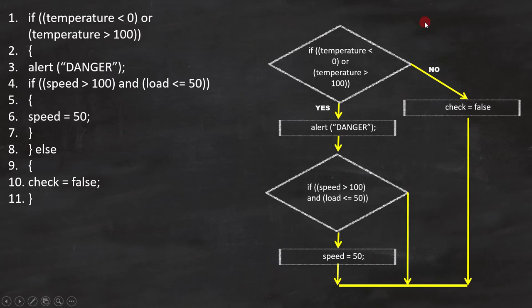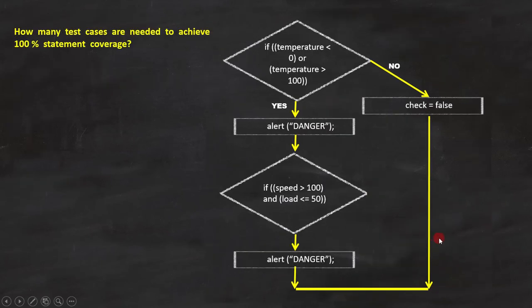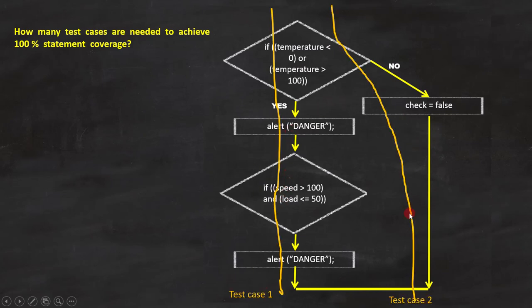Now the flowchart is complete. Now let's use this flowchart to find the correct answer. As per the question, we have to achieve 100% statement coverage. Since we have statements in these two paths, we need two test cases to cover these statements. So that means we need only two test cases. Option D is the answer.